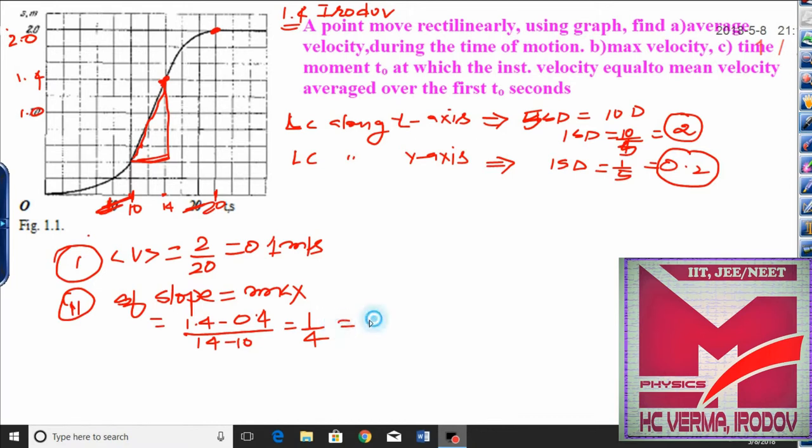1 upon 4 means 25 centimeters per second - sorry, it is written centimeters over here. And now the third part of the question.